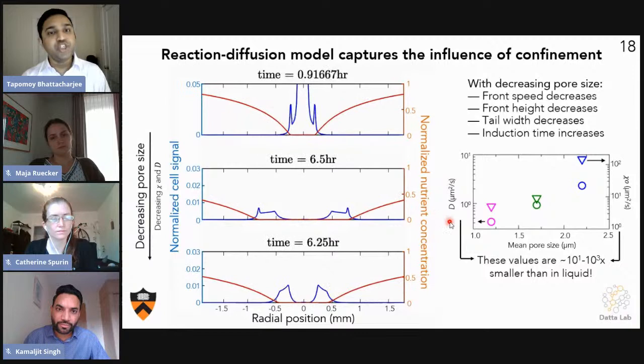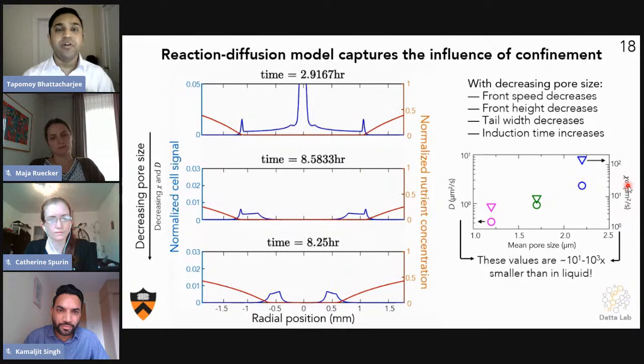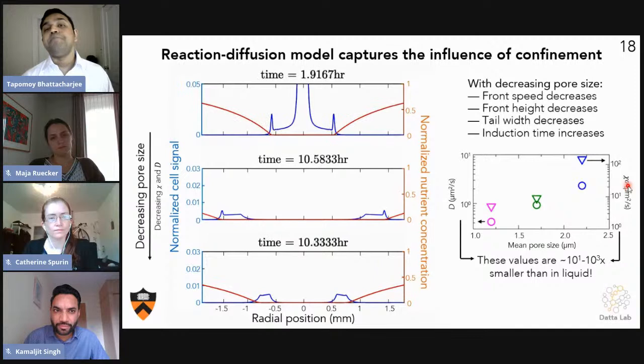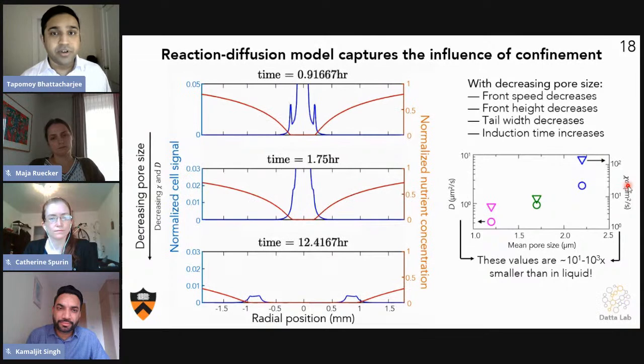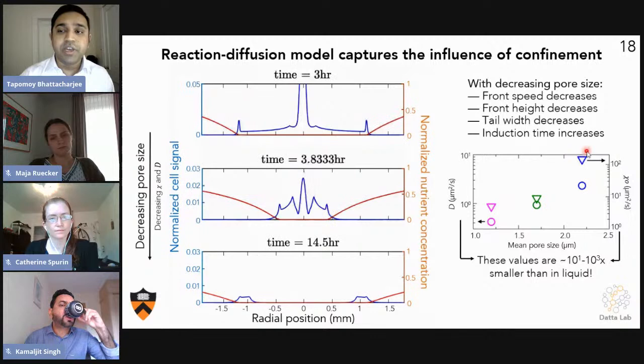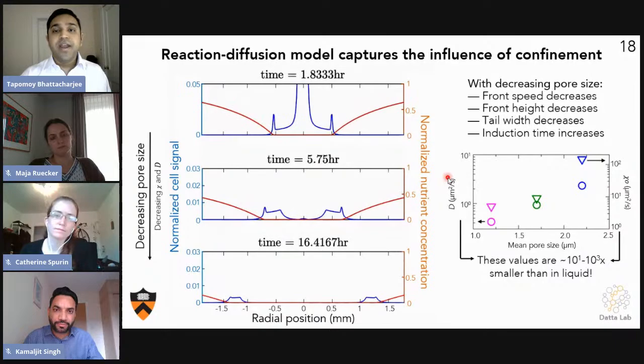Finally, since we are imposing this measured diffusivity in our model, we can measure the chemotactic parameter or the chemotactic sensitivity of this bacteria in porous media. Traditionally, this is thought to be an intrinsic parameter of bacteria, an intrinsic property, which we found that in porous media, the chemotactic parameter is also pore size dependent.